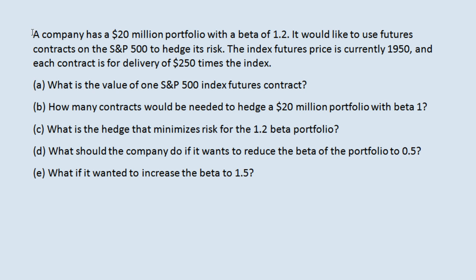The company would like to use futures contracts on the S&P 500 index to hedge its risk. The index futures price is currently $1,950 and each contract is for delivery of 250 times the index. The S&P 500 index futures is a real thing — you can look up its current price online, and it is for delivery of $250 times the value of the index.